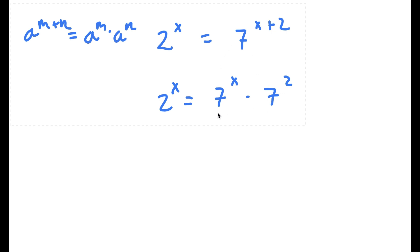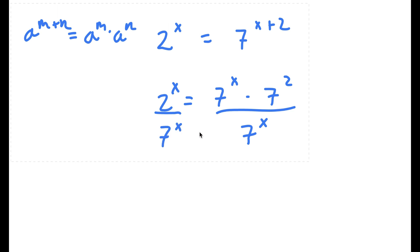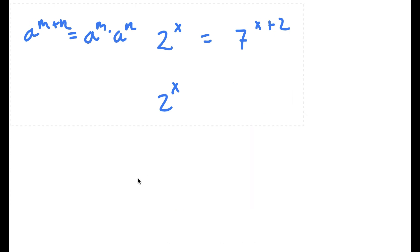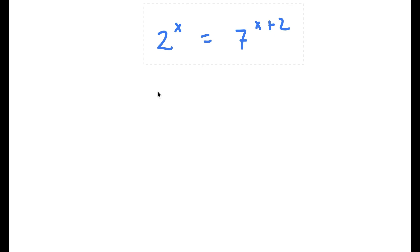Now I'm going to go ahead and divide both sides by 7 to the power of x. So now I have 2 to the power of x over 7 to the power of x is equal to 7 to the power of 2.